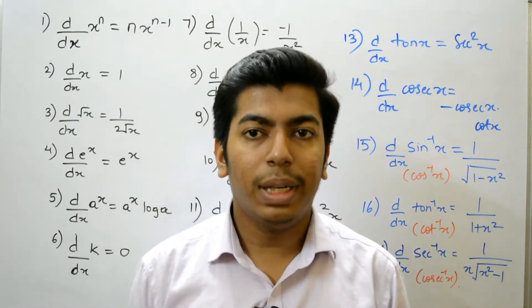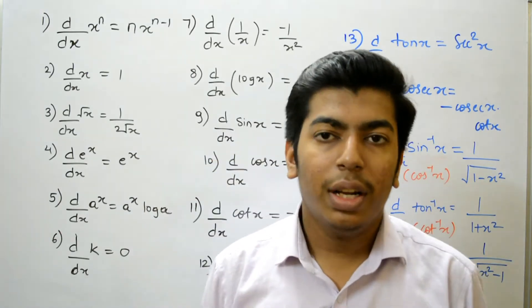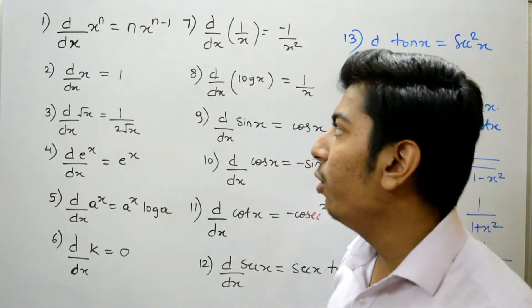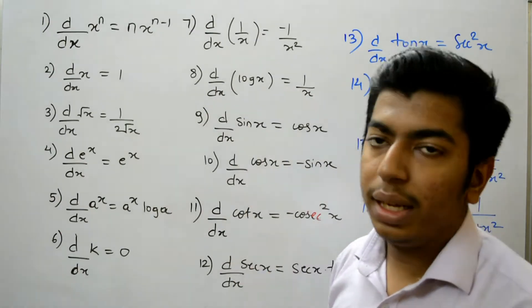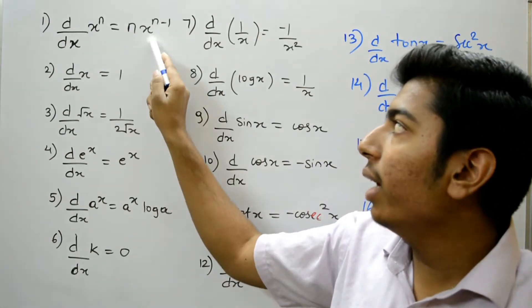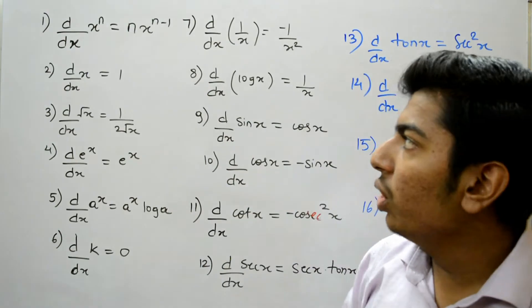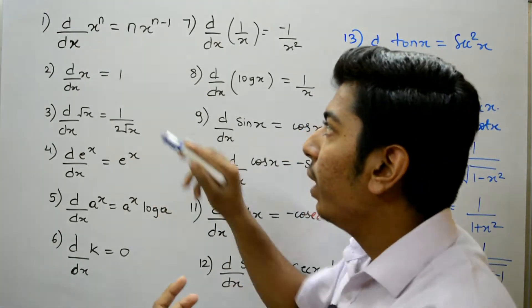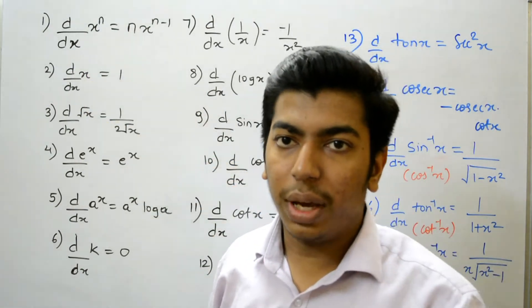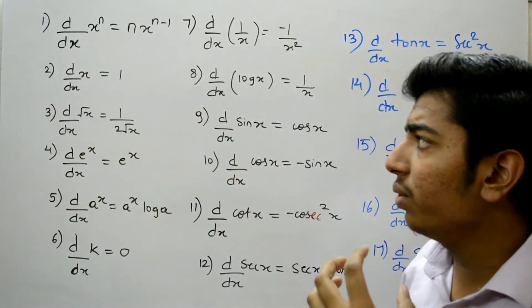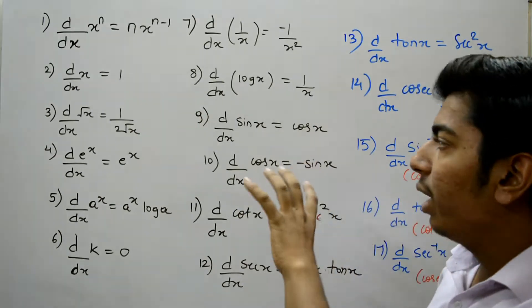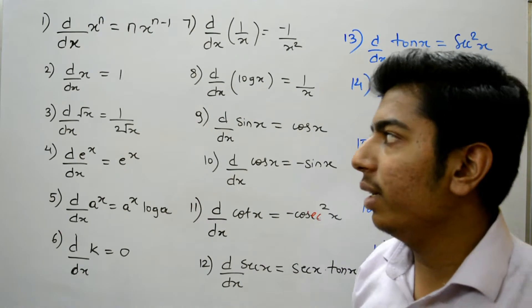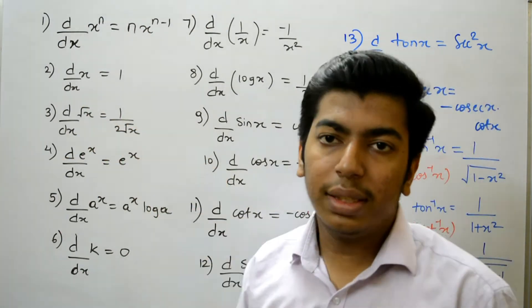In this video we will discuss the formulas for derivatives. The first formula is: the derivative of x raised to n is n times x raised to n minus 1. Here, d/dx is the derivative of x raised to n with respect to x. We have taken the derivative with respect to x throughout. The next formula is the derivative of just x, which is 1.